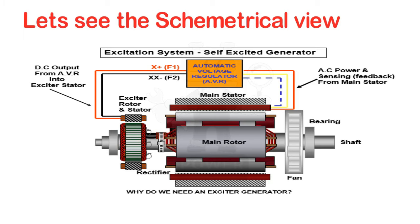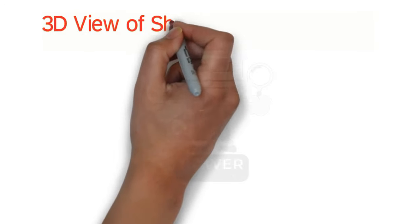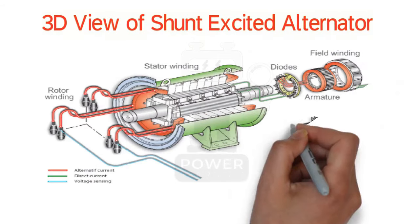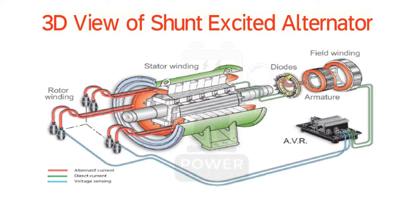This is the simple self-excitation system. Let's have a look at the 3D view of a shunt-excited alternator. Here you can see the field winding connected with the AVR DC supply, and two blue wires coming from the stator winding. The rotor is also present, and these two wires connect to the diodes, which connect to the main rotor windings. This type of shunt-excited alternator is also called a self-excited alternator.